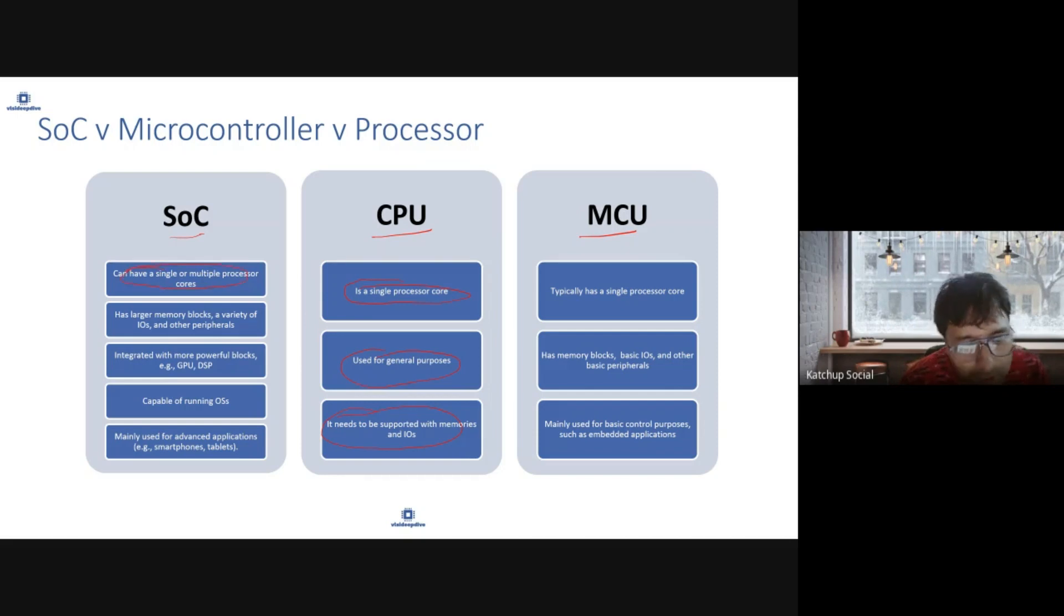Compared to that, SoC can have single or multiple processor cores, has large memory blocks and a variety of IOs. It has a lot of peripherals as well. It can integrate more powerful blocks like DSP, GPU, AI processing engine. It also has the capability of running OS and is mainly used for advanced applications like smartphones and tablets.